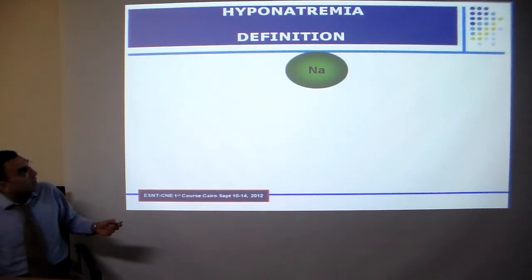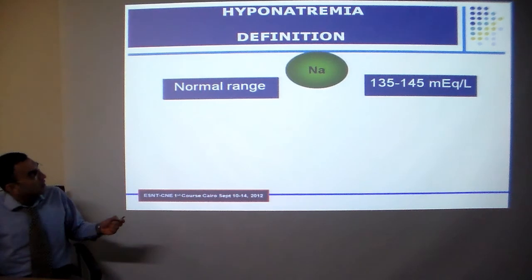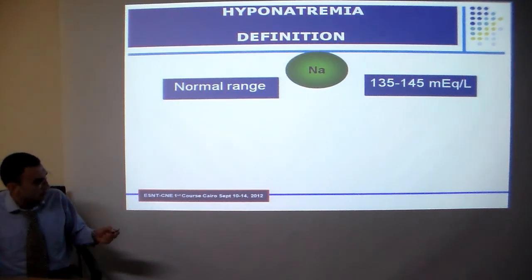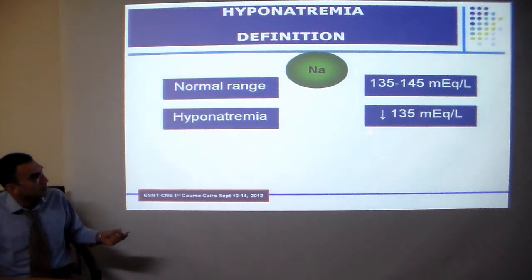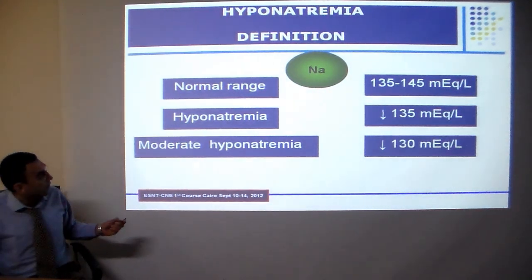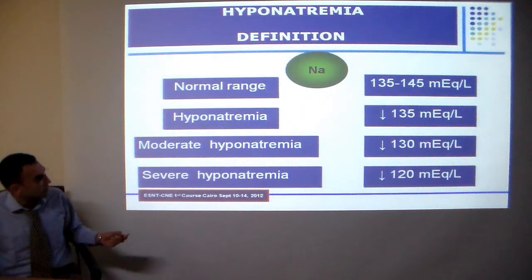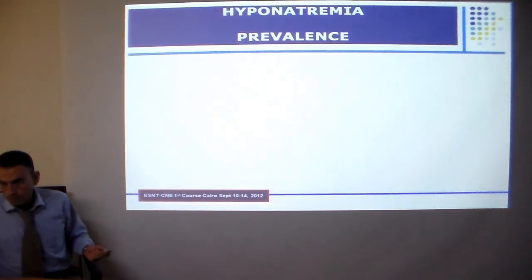As we know, normal serum sodium ranges between 135 to 145, and hyponatremia is defined as serum sodium less than 135. Some define moderate hyponatremia as sodium less than 130, and severe hyponatremia as sodium less than 120.